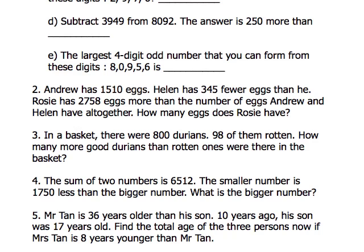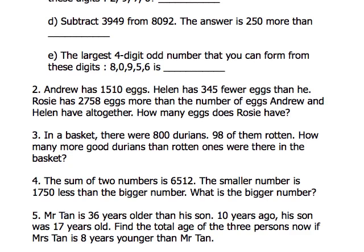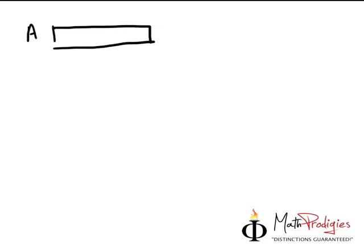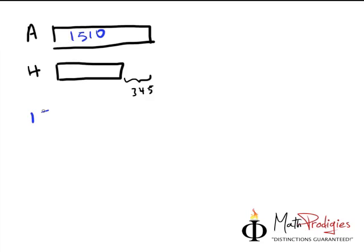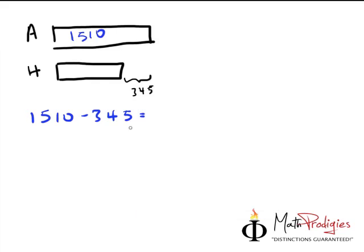So let's draw this out. Andrew has 1,510. Helen has 345 lesser than Andrew. So let's find out Helen's amount first — let's fill in the blanks. Andrew is 1,510, so Helen is 1,510 minus 345. Using our handy dandy calculator, 1,510 minus 345 gives us 1,165. So Helen has 1,165.